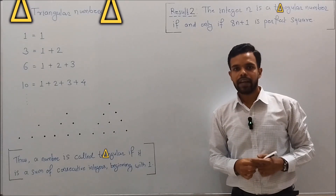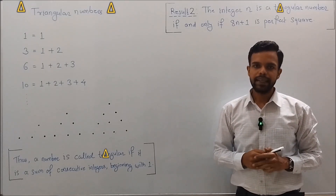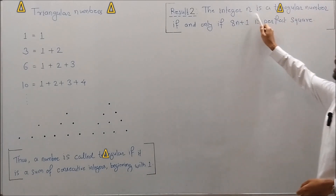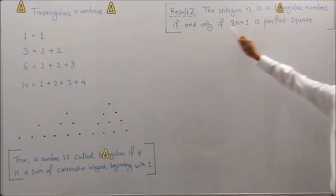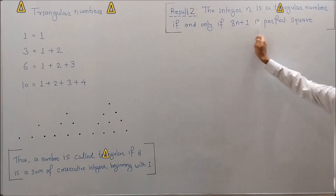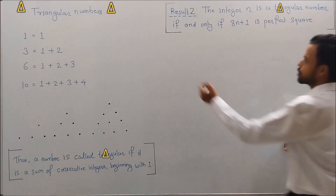The next result we will prove about triangular numbers is: the integer n is a triangular number if and only if 8n + 1 is a perfect square. Let's begin the proof.